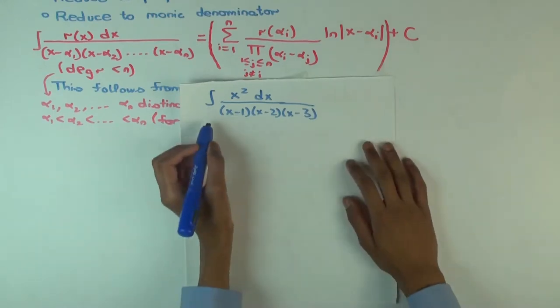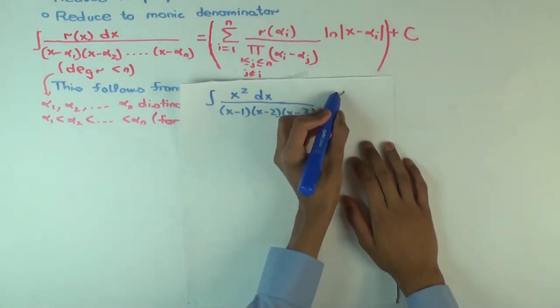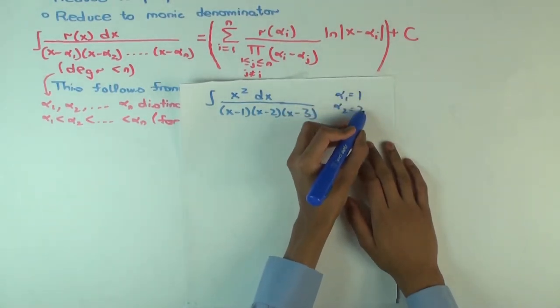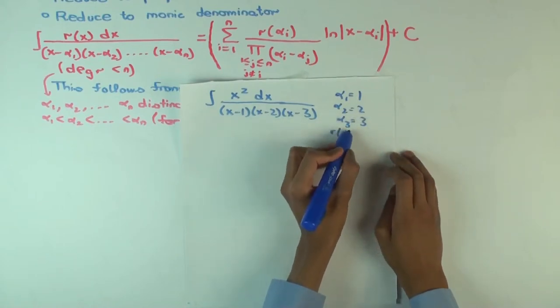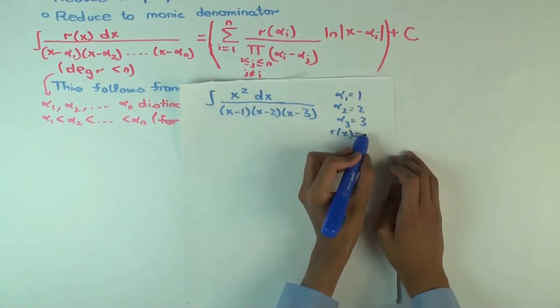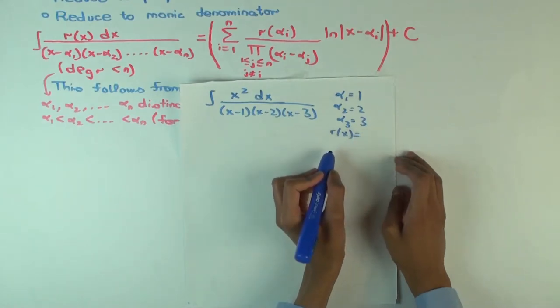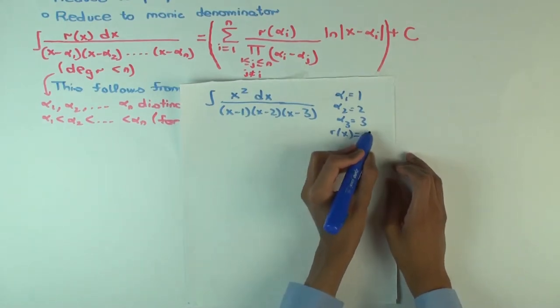So what's the first term, the term for alpha? So alpha 1 is 1, alpha 2 is 2, and alpha 3 is 3. And what is r(x)? X squared.